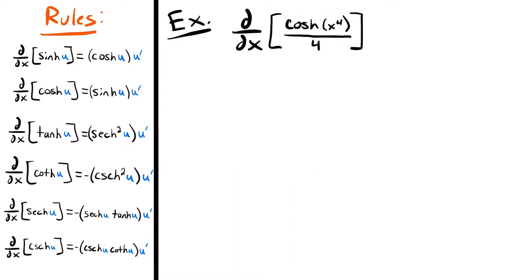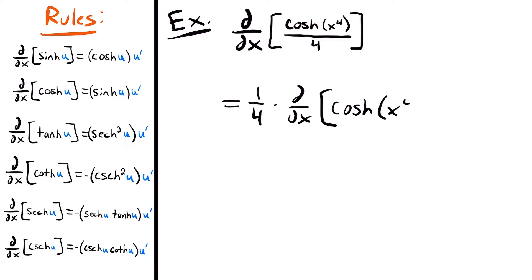Next, we want to find the derivative of hyperbolic cosine of x to the fourth power divided by 4. We need the derivative rule for hyperbolic cosine: the derivative of hyperbolic cosine of some function u is equal to the hyperbolic sine of that same function u times the derivative of u. Note that the derivative is not going to affect this constant multiple, so this equals one fourth times the derivative of hyperbolic cosine of x to the fourth power.